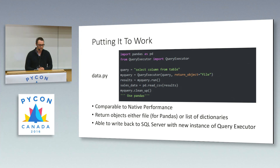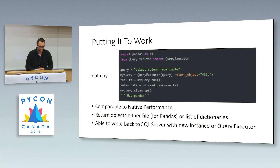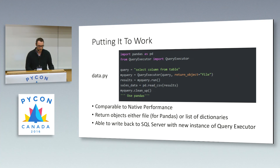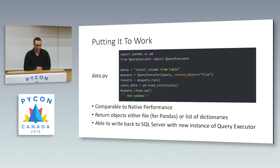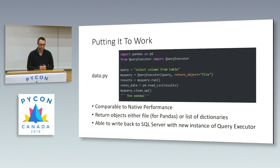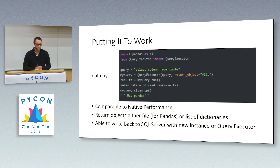In practice, you import pandas as pd and import QueryExecutor from query_executor. From there, you initialize a standard query — for example, a SELECT column FROM table. You initialize my_query with that query, specify that you want the return object to be a file, and the file is passed into results through my_query.run. Results can then be loaded into pandas read_csv, and you're now operating with a normal pandas DataFrame in just a few lines of code.